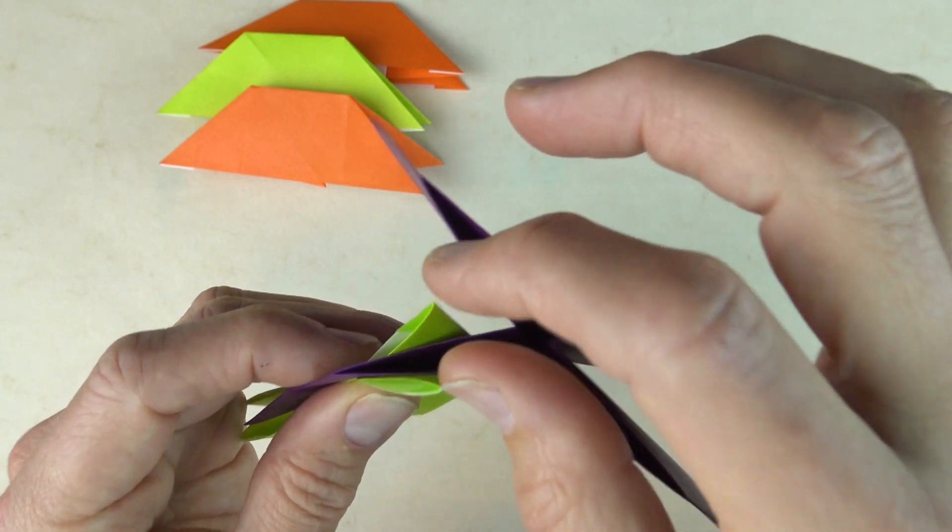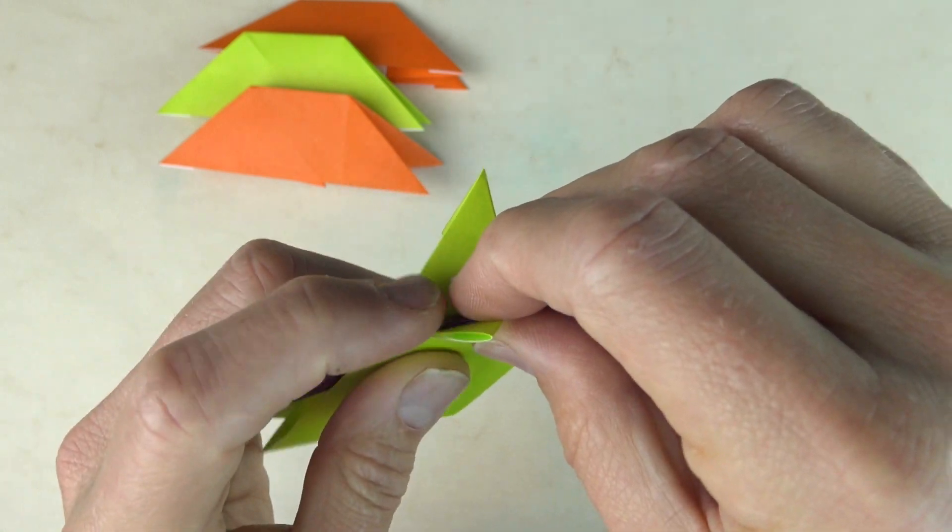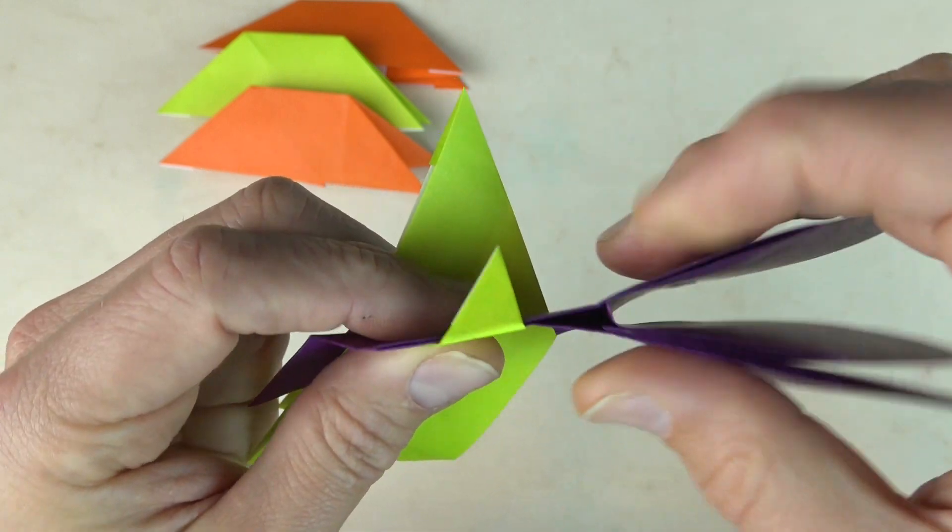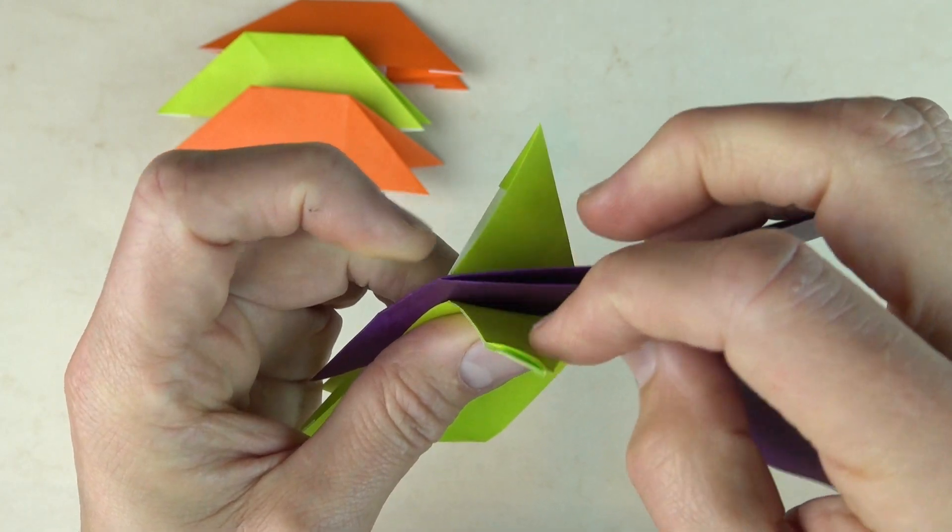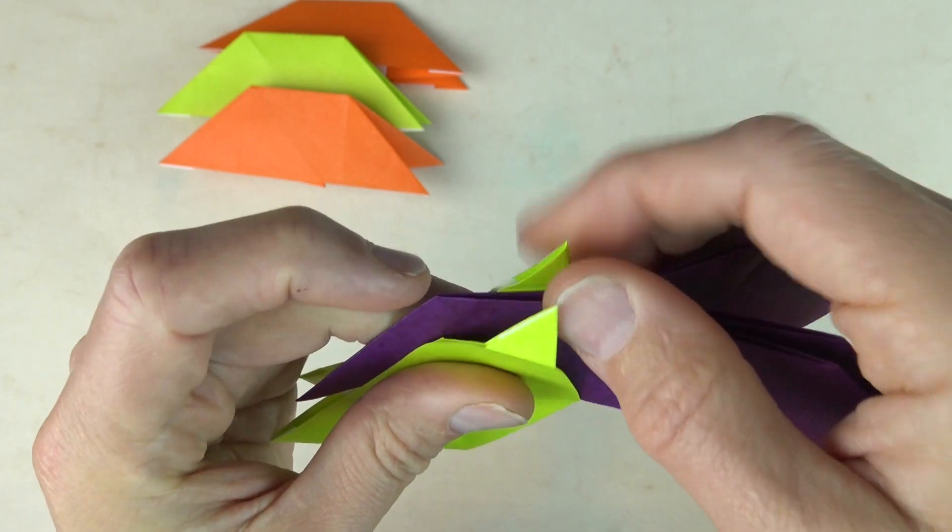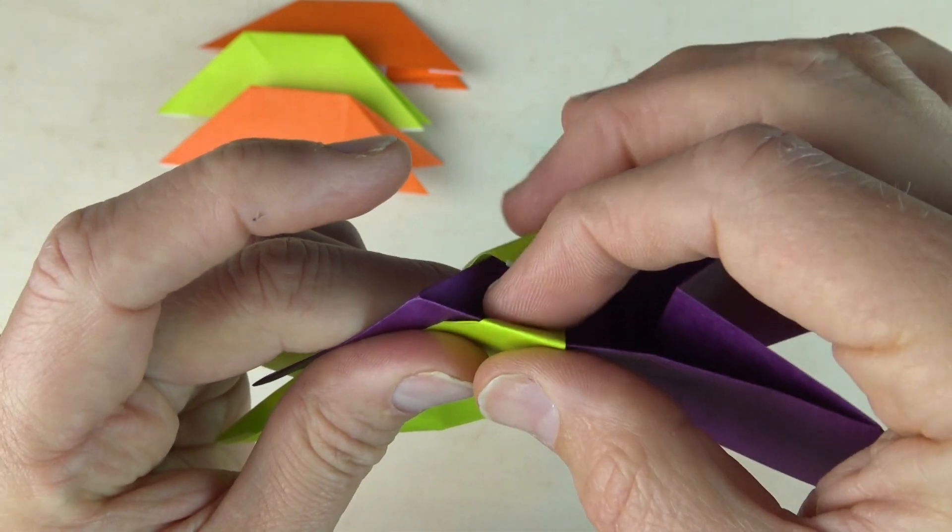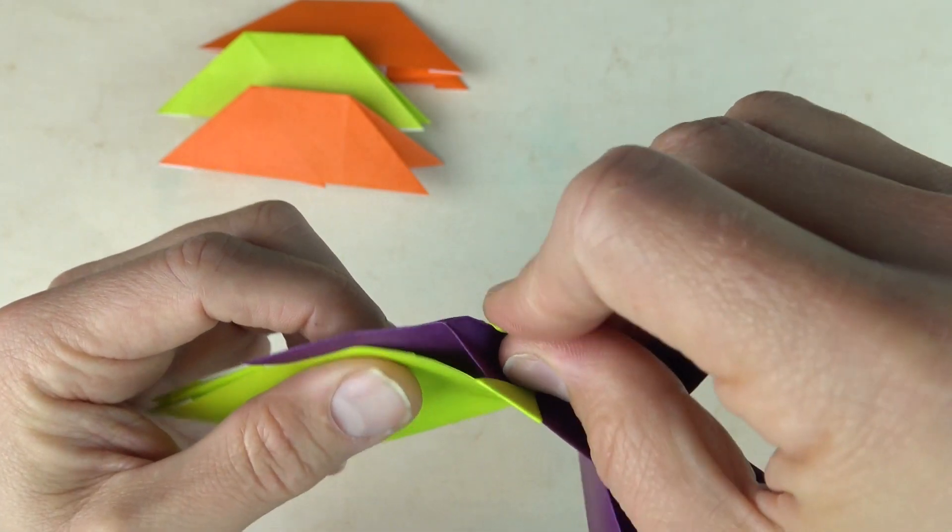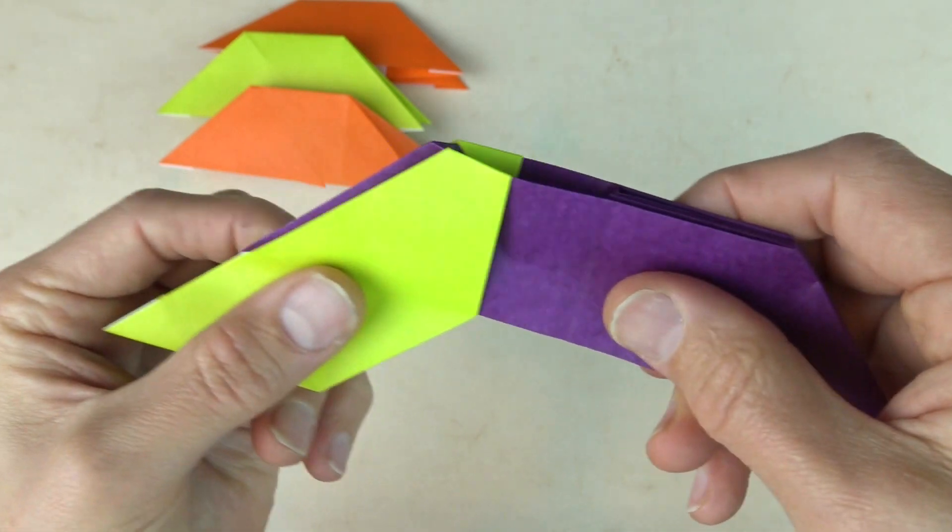And now we're going to insert these two flaps into this pocket. And we're going to use the Rob's World method. So fold this flap over the edge. Both edges. Like that. And now unfold. And fold the rear flap over both edges. And unfold. And now open the pocket. And put them in. And it should be able to slide easily. Like that.